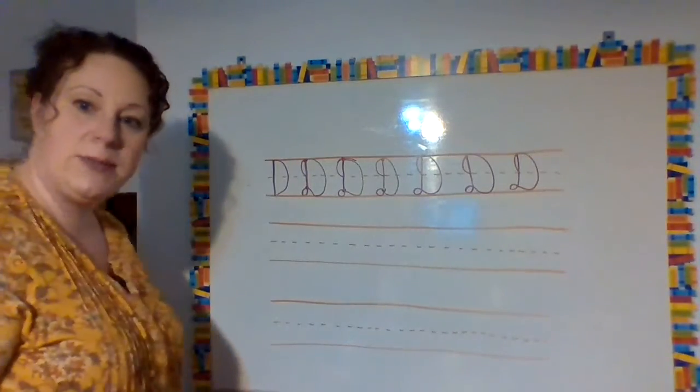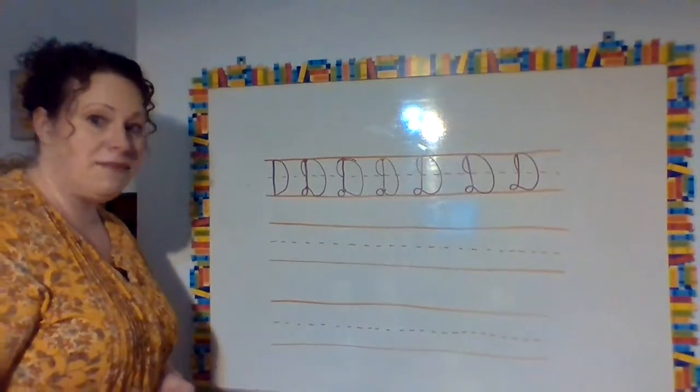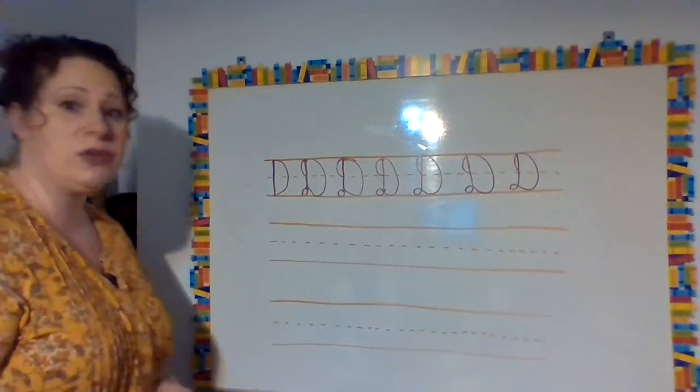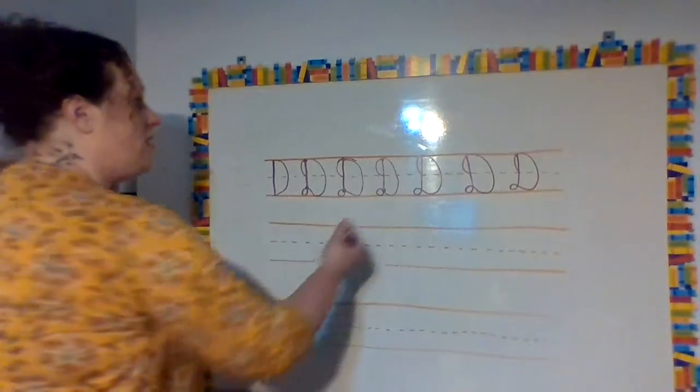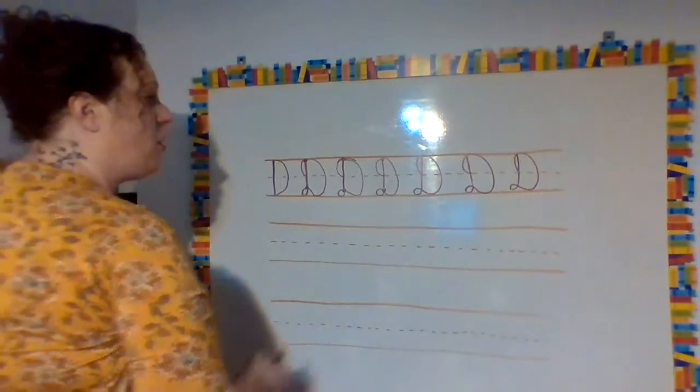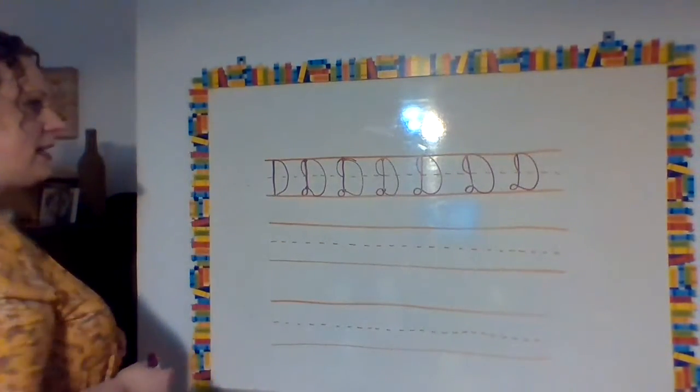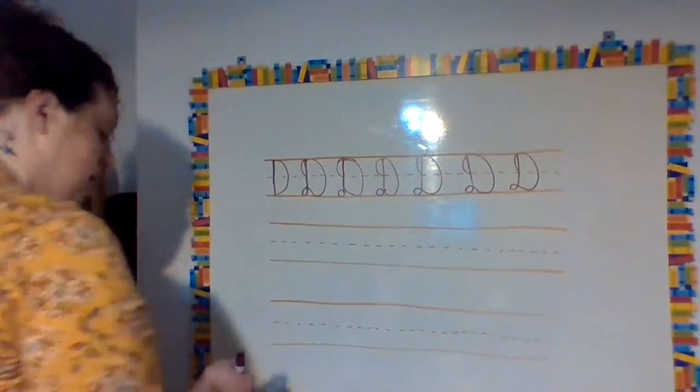Whatever way works best for you. If you want to create the dots so that you have a point to start and stop, that's totally fine. If you don't and don't like that, that's fine. If you want to start up here and come around like I showed you, that's fine. If you don't, go the other way. You pick, okay? As long as it looks like a D, I'm okay with that.